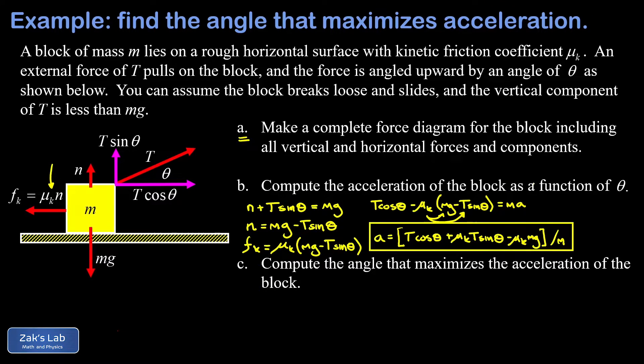The way we're going to attack this is: we have an expression for acceleration as a function of theta, so we're going to take the theta derivative of this acceleration expression and set it equal to zero. We want a prime of theta. There's a 1 over m out in front, but it's not going to matter because we're setting it to zero after we do this derivative. The theta derivative of T cos theta is negative T sin theta.